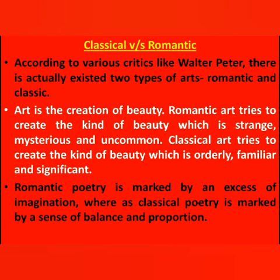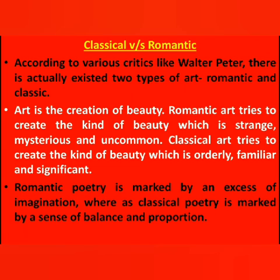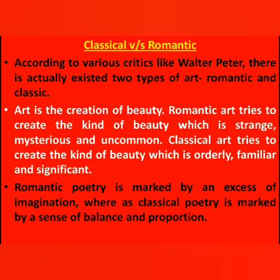After the Romantic age we have the Victorian period, the Modern era, and the Post-modern era. According to various critics like Walter Pater, there actually exist two types of art: one is romantic and the other is classical. Art is the creation of beauty. Romantic art tries to create beauty that is strange, mysterious, and uncommon, whereas classical art tries to create beauty that is orderly, familiar, and significant. Classical art is straightforward with smoothness and orderliness, while romantic art is distinguished by strangeness and mystery.